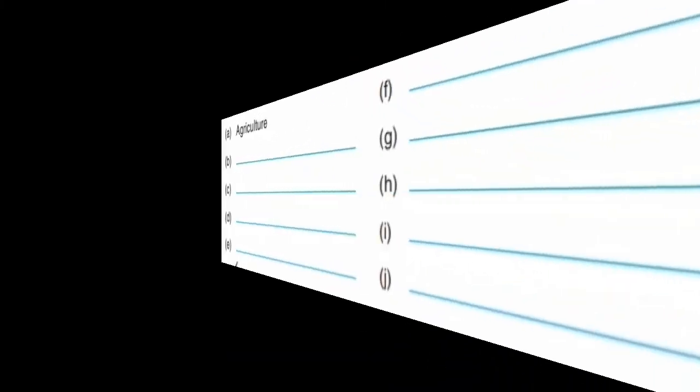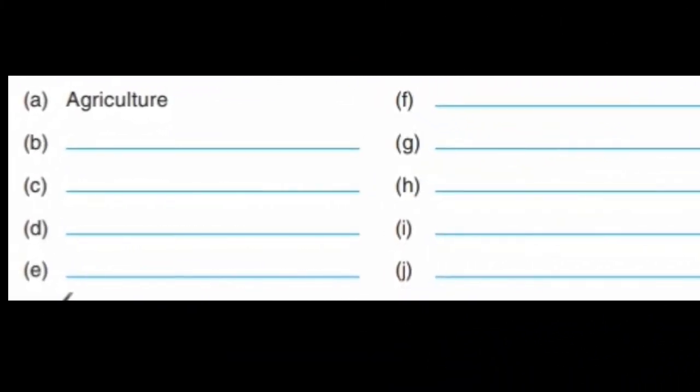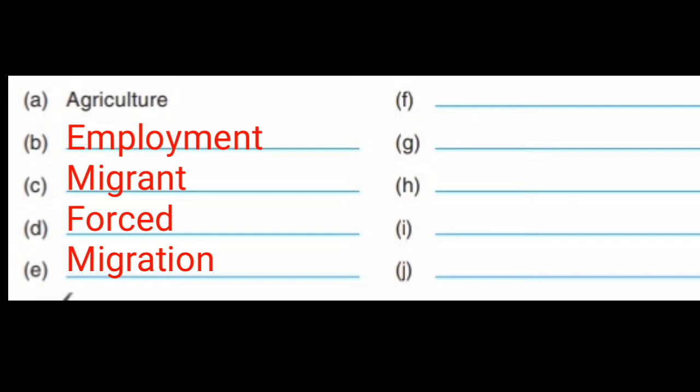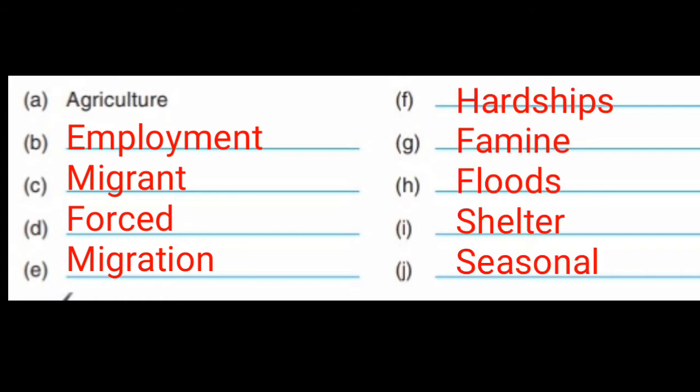You have to write the answers in the portion given below: A - agriculture, B - employment, C - migrant, D - port, E - migration, F - hardships, G - famine, H - plots, I - shelter, and J - seasonal. Make the grid and write down all these words, which are from the chapter Human Migration.